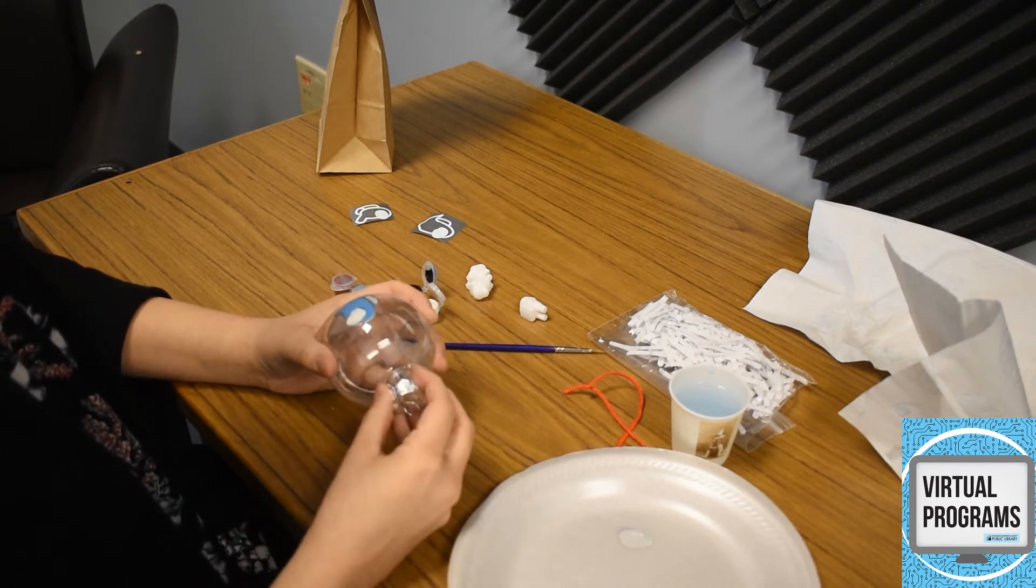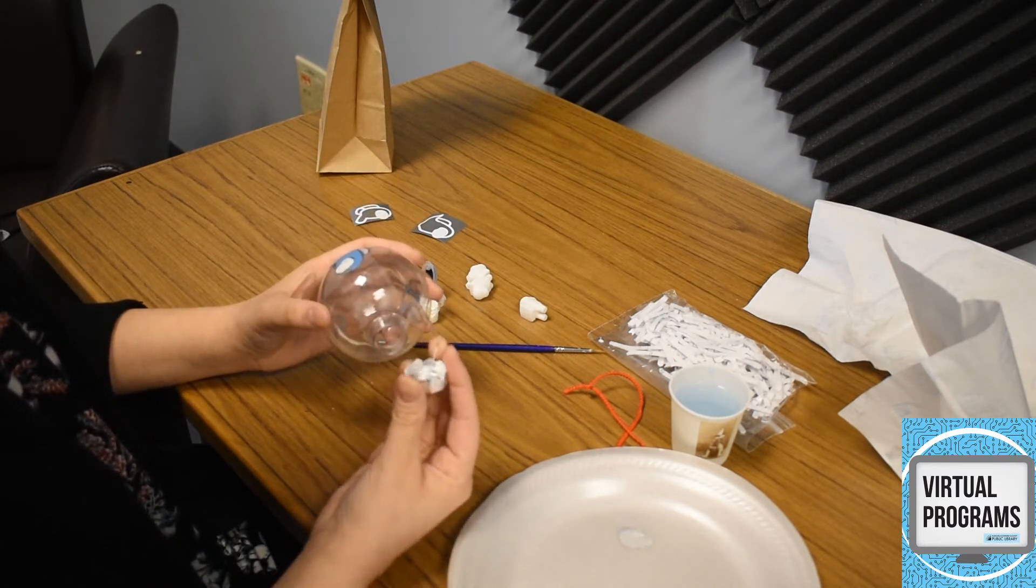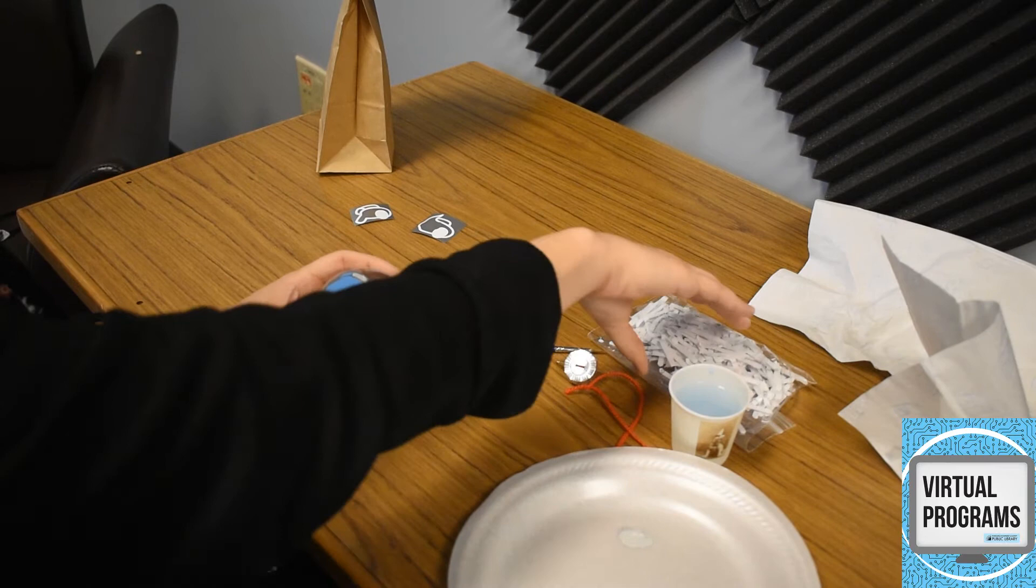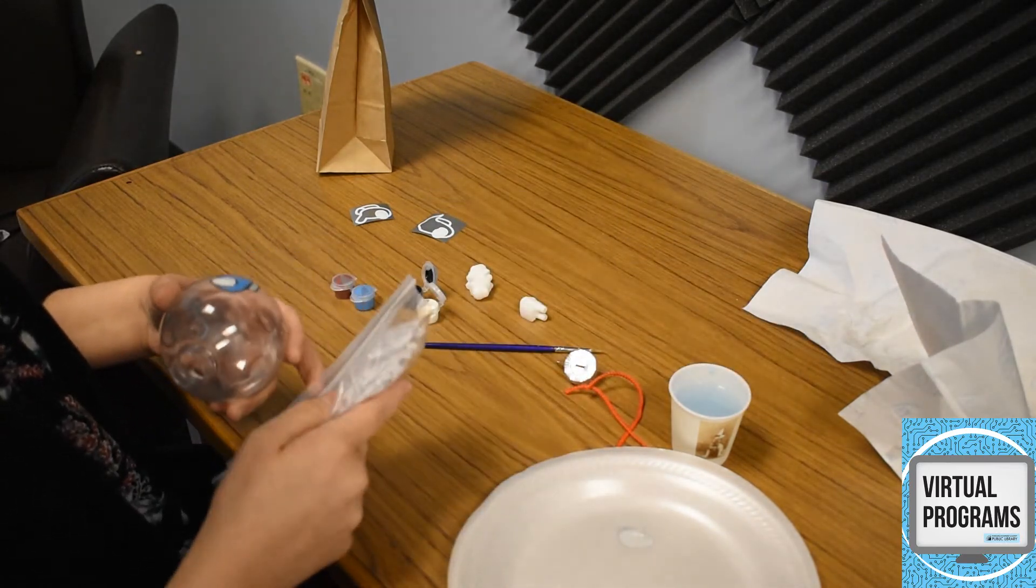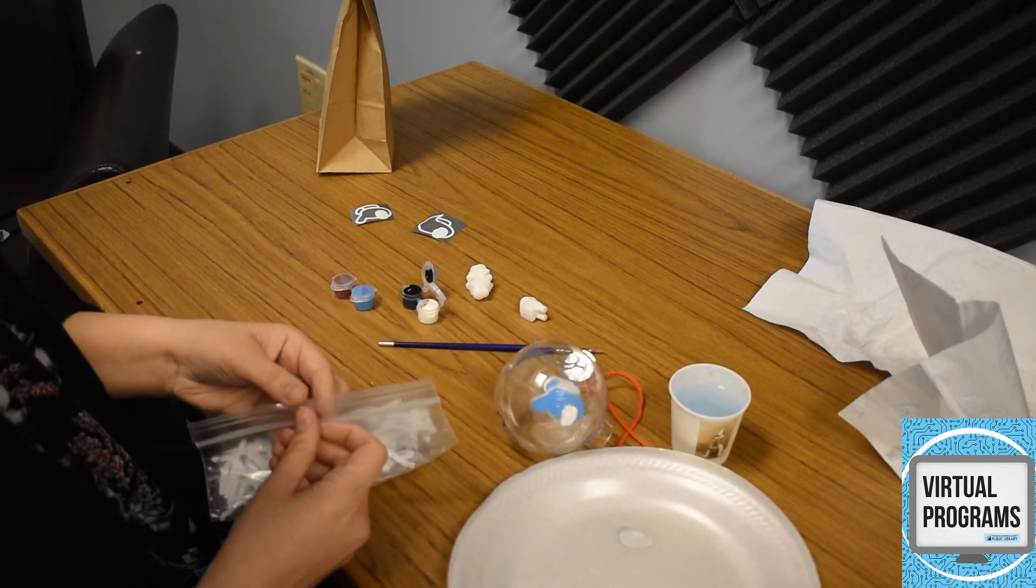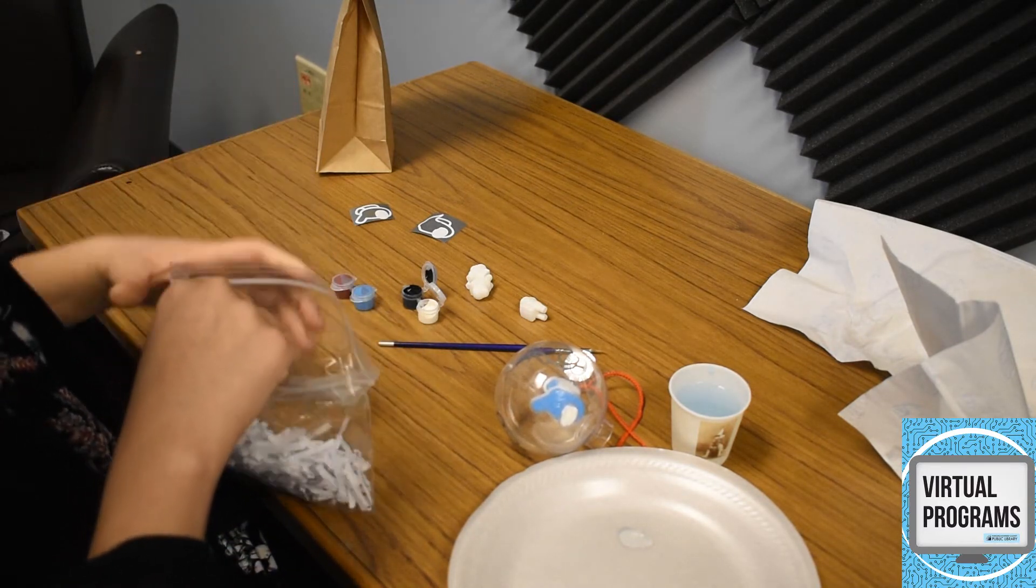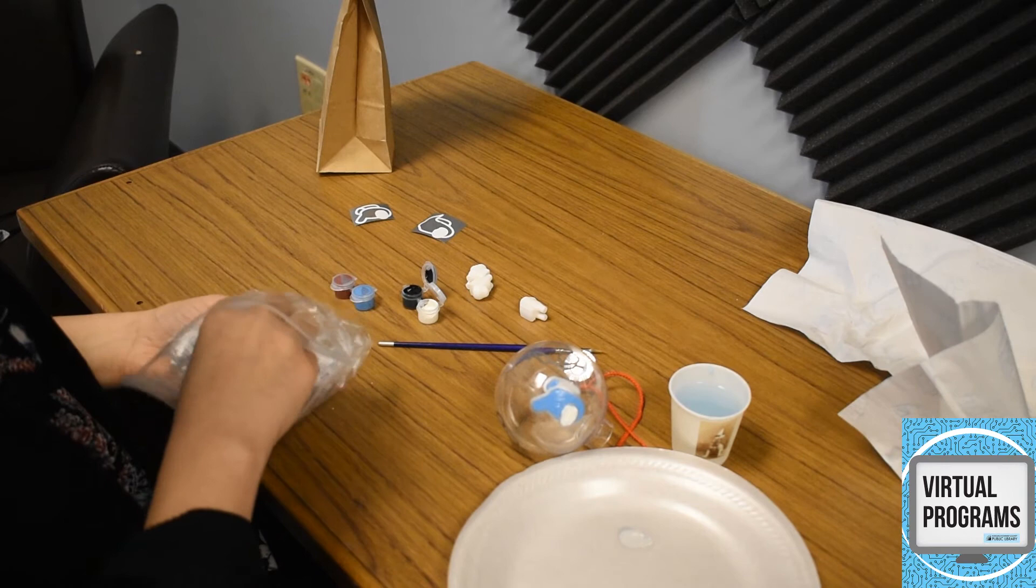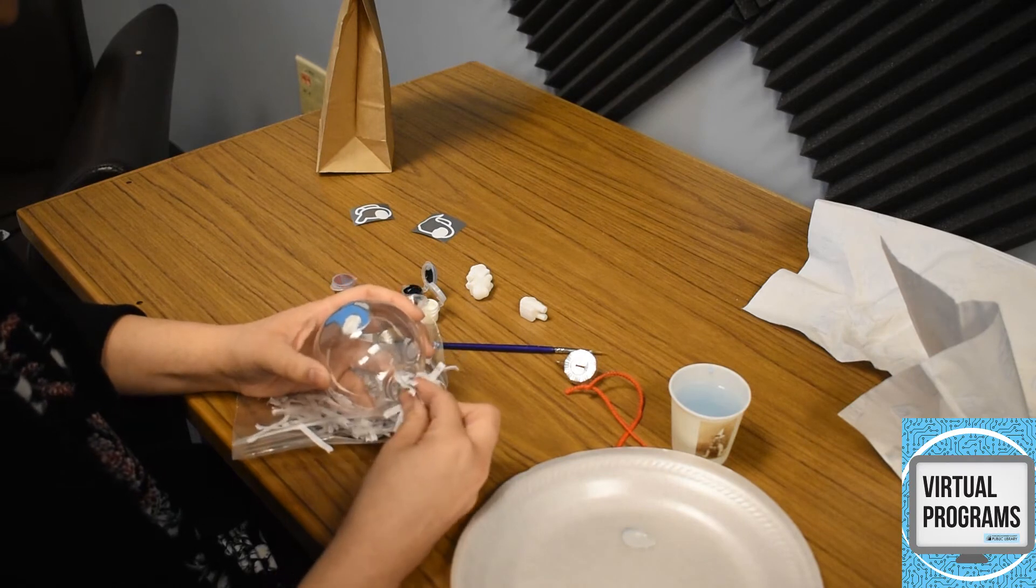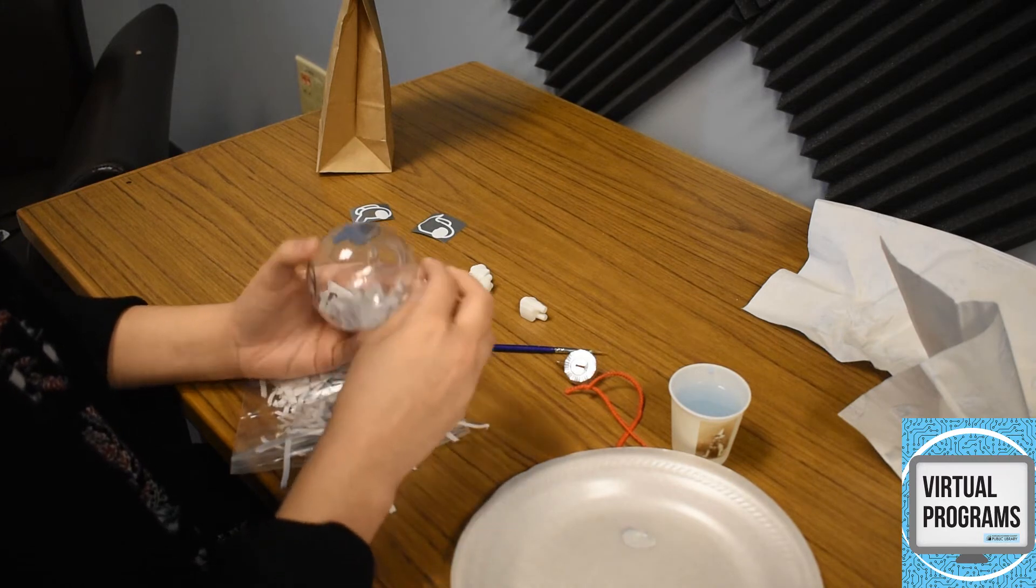And we're going to start putting things inside of our ornament. So what I did here to take the top off is I just pulled it right off. Then you can set that down. And we're going to put a little bit of snow in here. You can put as much or as little as you like. Set that down. Open this up. So you'll just take a pinch at a time.